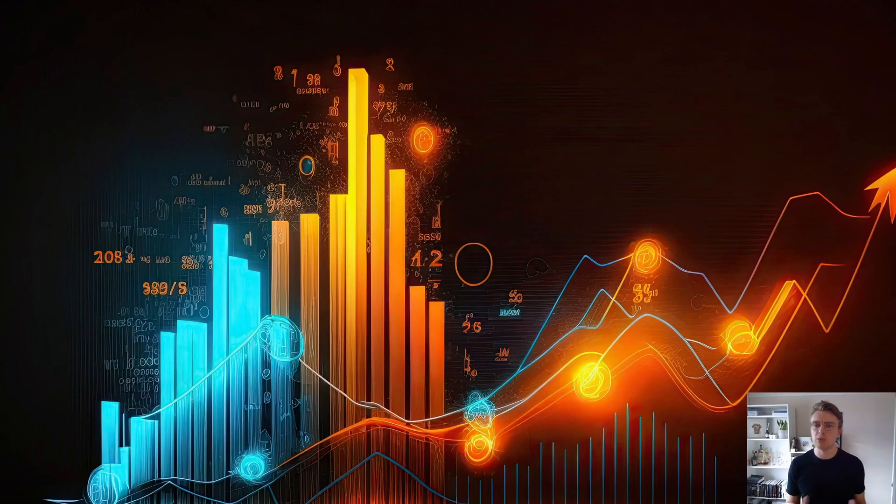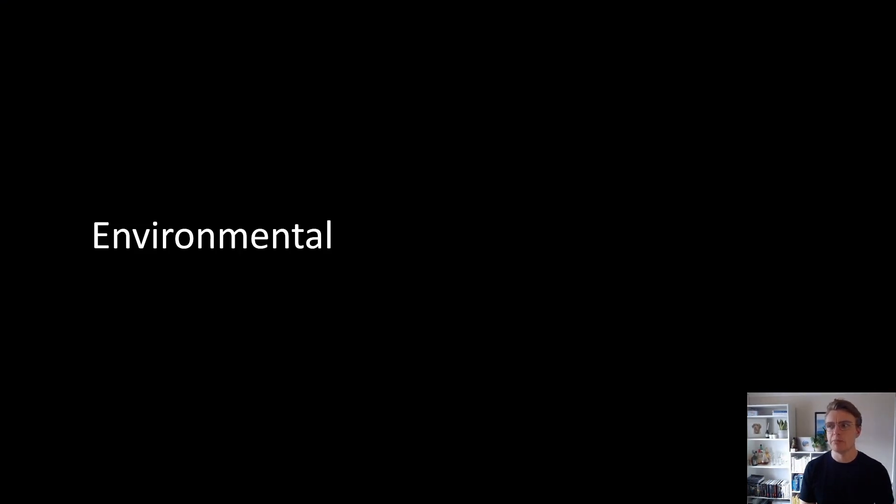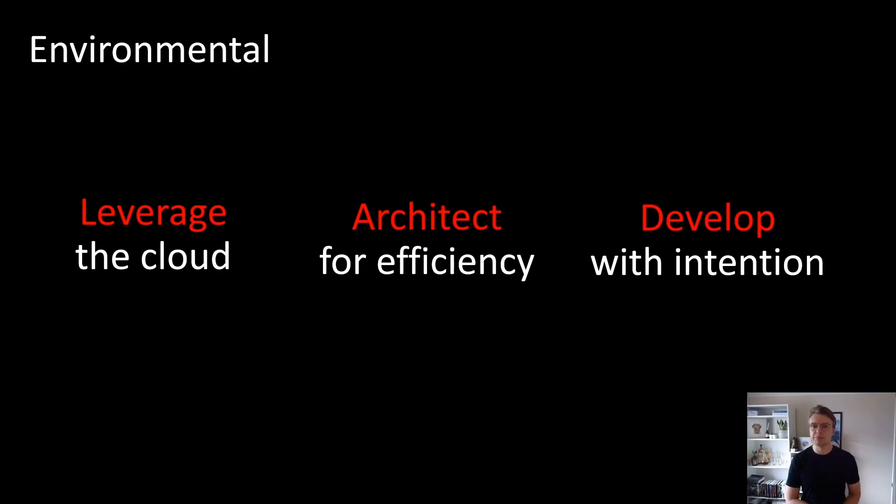So let's walk through each of these pillars in a bit more detail and apply the lens of software architecture to them. We'll start with environmental impact. A report by S&P Global Market Intelligence discusses the impact of moving workloads to the cloud. The report estimates a combination of more up-to-date equipment and a better utilized fleet of hardware amounts to about an 85% saving in energy usage. And this is before considering the fact that many cloud providers are moving their data centers to 100% renewable energy. How can we architect for efficiency?